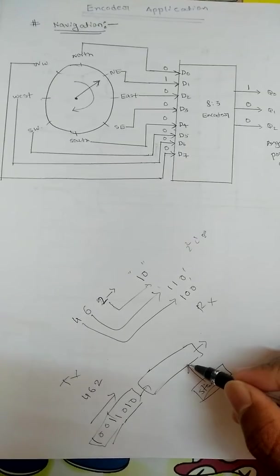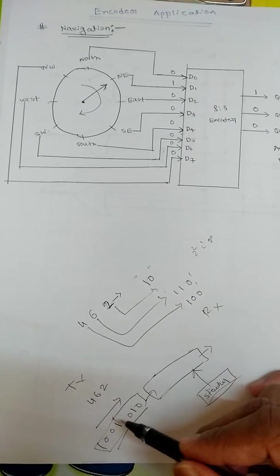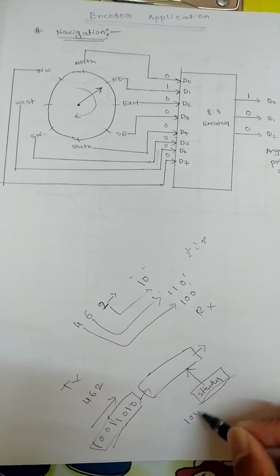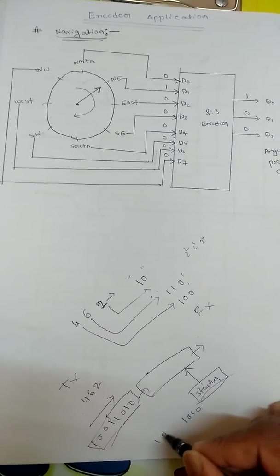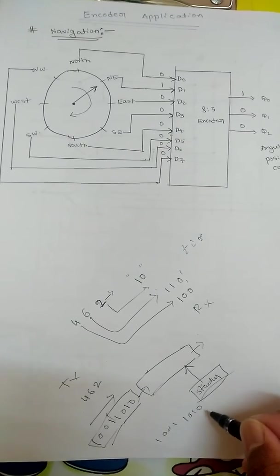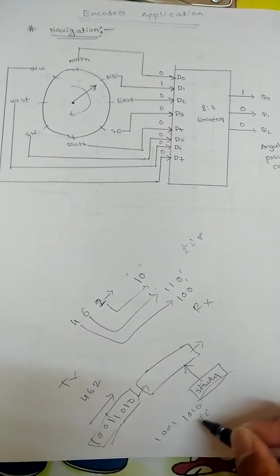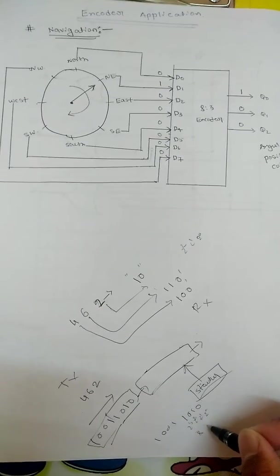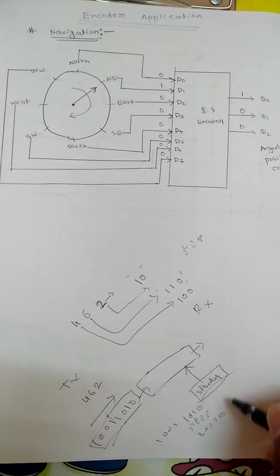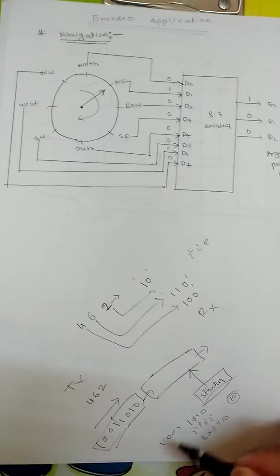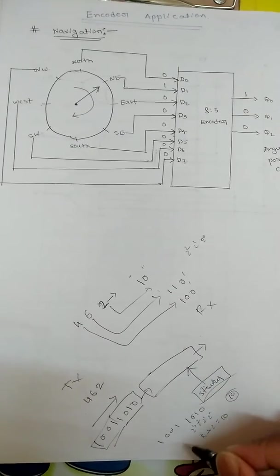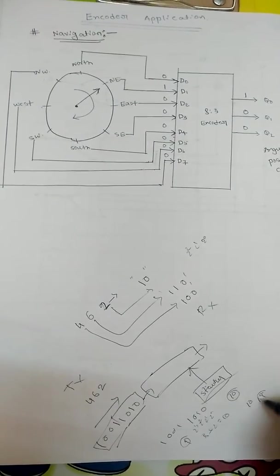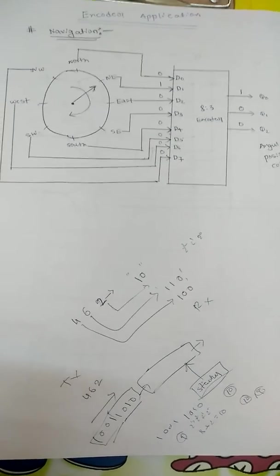Now when this fellow receives this data, it is in the form of 4 bits. It is 1, 0, 1, 0 and another bit is 1, 0, 0, 1. So what he will think, this is 2 to the power 0, 2 to the power 1, 2 to the power 2, 2 to the power 3. This is 8 and this is 2, 8 plus 2 is 10. So he will decode it as 10 and this is 8 plus 1, 9. So he will decode the transmitted data is 10 and 9.